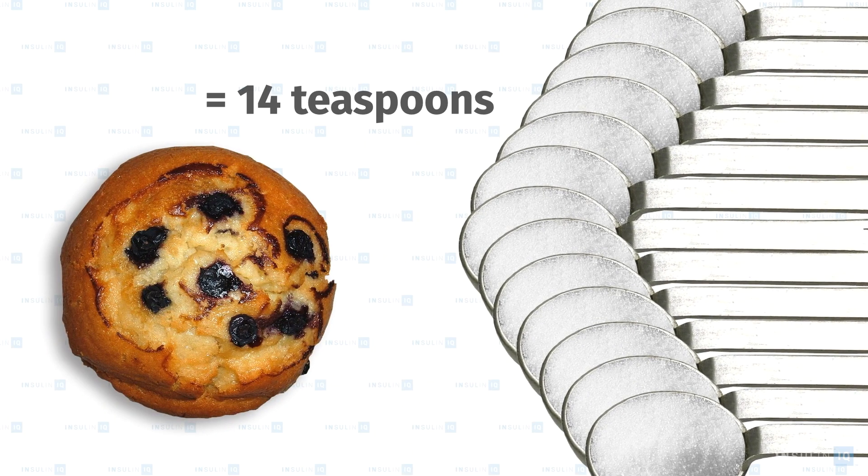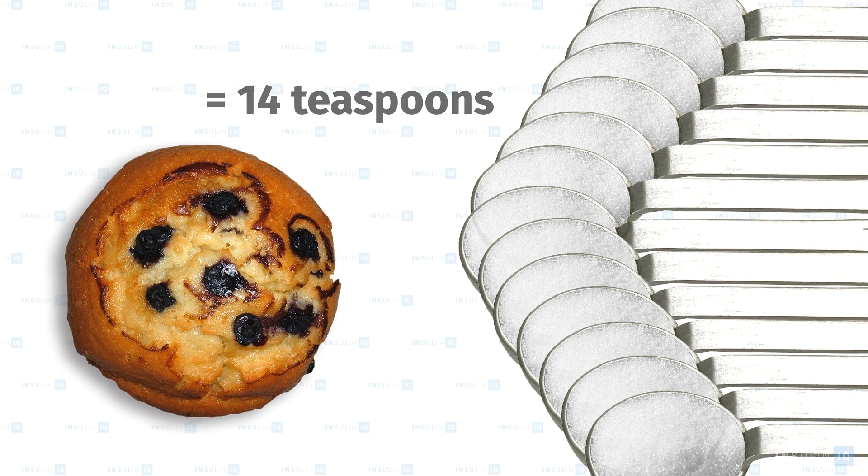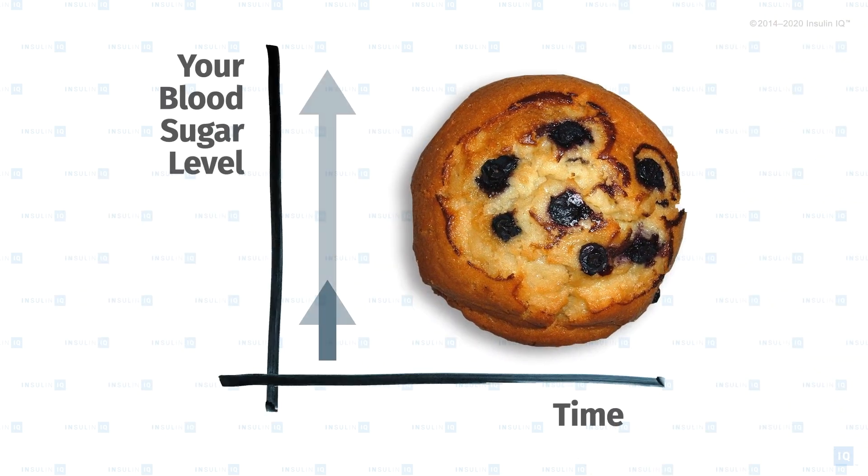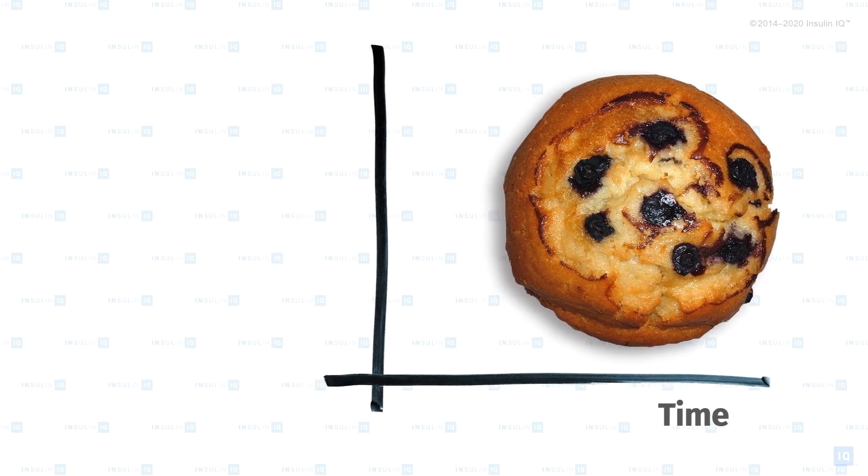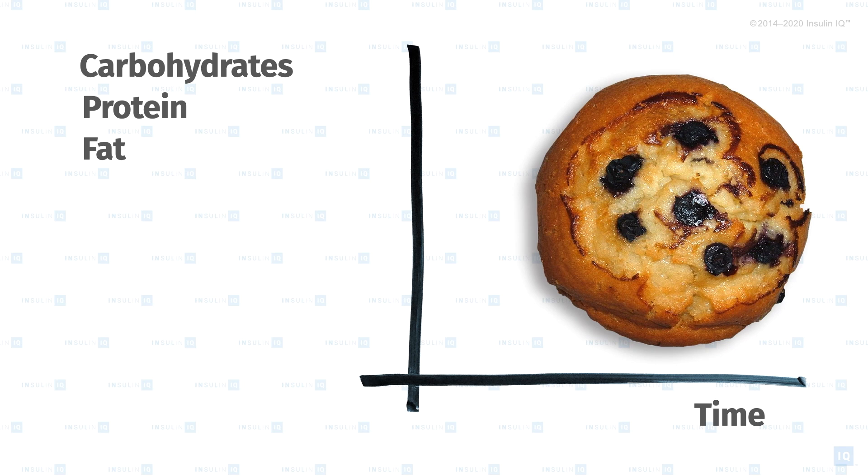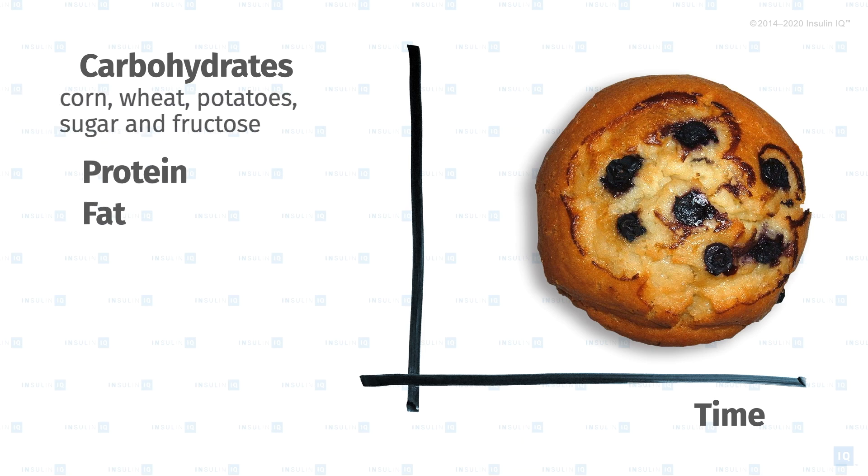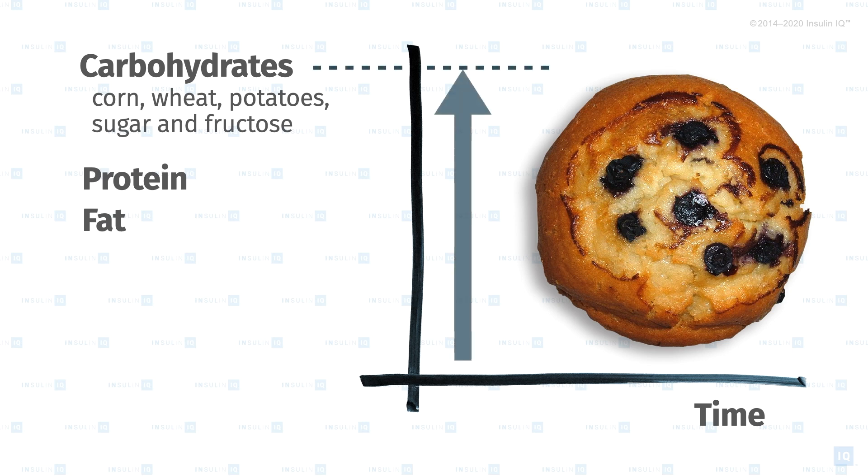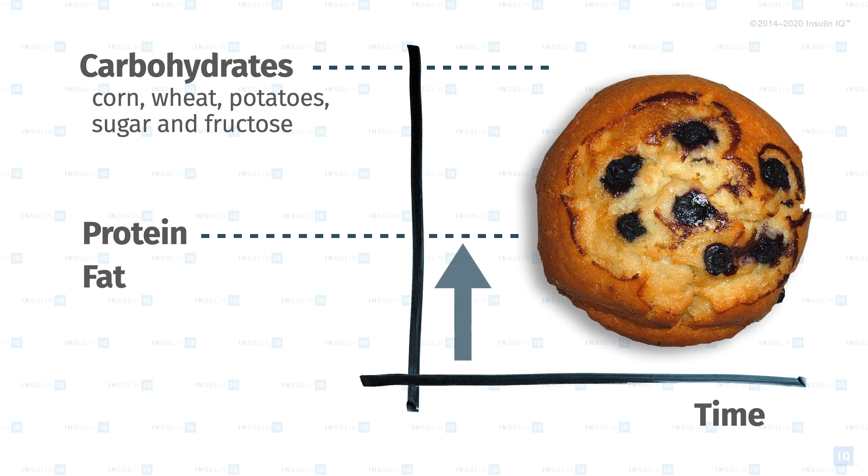The three macronutrient food groups—carbohydrates, protein, and fat—have different impacts on blood sugar levels. Carbohydrates like corn, wheat, potatoes, sugar, and fructose have the most impact. Protein has much less of an impact. And what about fat? Healthy fats have almost no effect on blood sugar levels.